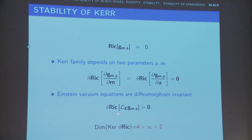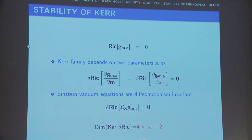You expect this to create problems. In fact, you get even more problems because due to diffeomorphism invariance, you can do variations relative to different diffeomorphisms and you get a huge set of the kernel. The kernel of the linearized Einstein equation has this plus this, so the full dimension of the kernel is actually four times infinity plus two. That of course makes life very difficult.